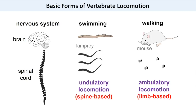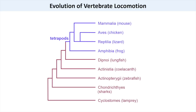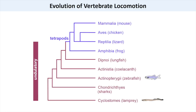Since land vertebrates evolved from fish-like ancestors, one of the questions our lab has been interested in is when the neurons essential for limb-based locomotion first appeared. A common view is that during evolution, there was a gradual transition from the undulatory type of locomotion used by fish to the limb-based system of land vertebrates.